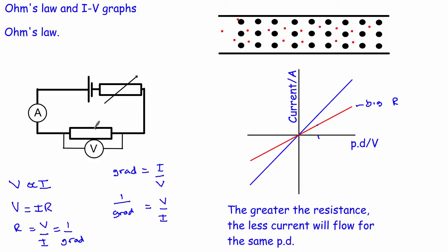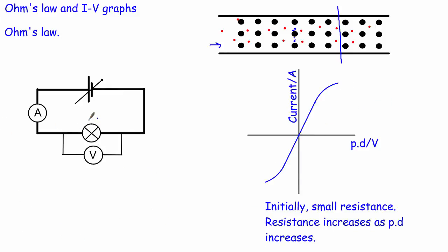That's for an ohmic conductor like a resistor. For a bulb, if you alter the potential difference and current, it starts off looking directly proportional, but then it curves where the resistance is increasing. The current flows through the filament; more energy is transferred to the ions, which vibrate more — with greater amplitude — and get in the way of the electrons more, making it harder for electrons to move along. So fewer electrons pass a given point when the filament is hot, meaning resistance increases.